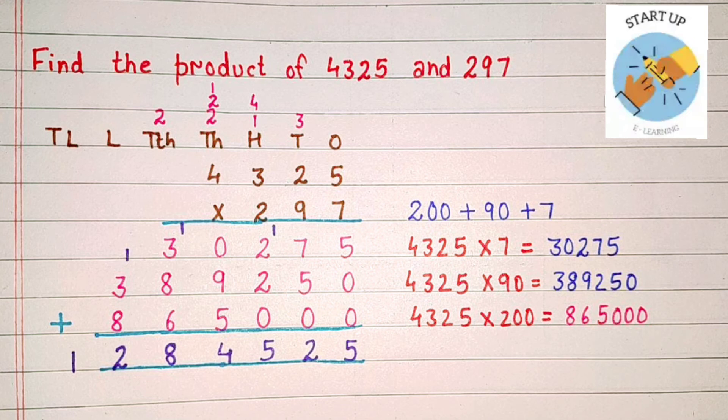Nine plus 5 equals 14; 4 will be written under thousands place and 1 carried to ten-thousands place. Three plus 8 plus 6 equals 17, plus 1 carried over, equals 18; 8 will be written under ten-thousands place and 1 carried to lakhs place. Three plus 8 equals 11, plus 1 carried over, equals 12; 2 will be written under lakhs place and 1 under ten-lakhs place.